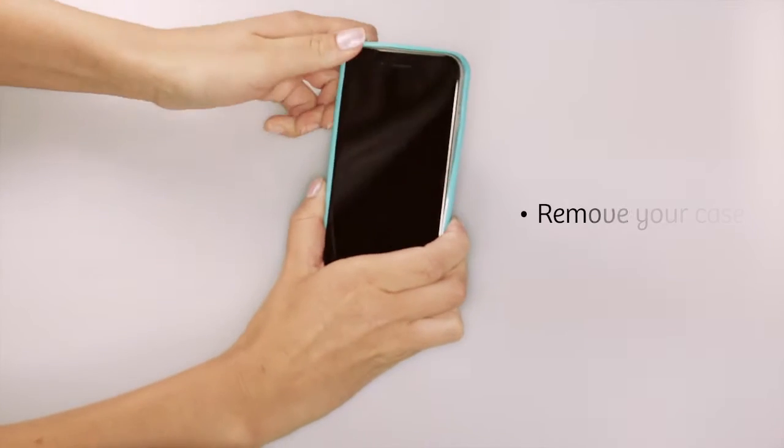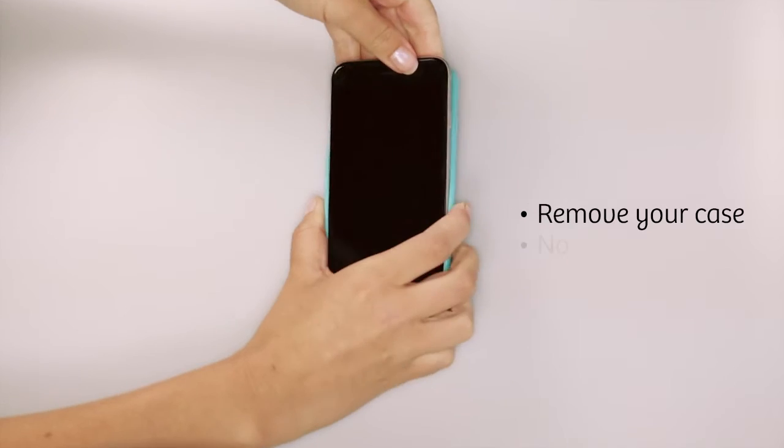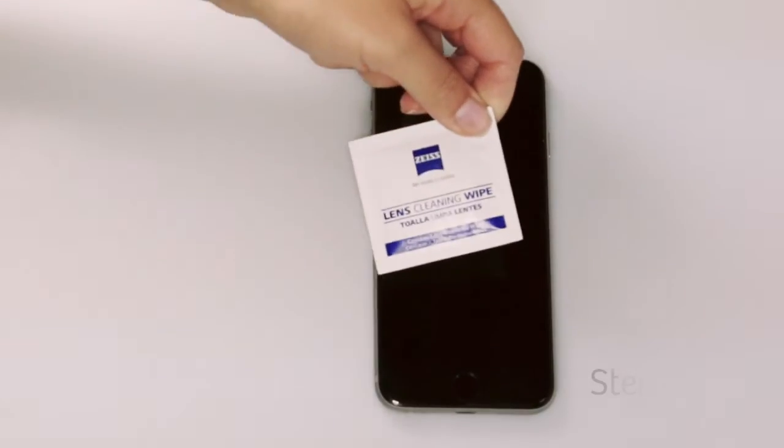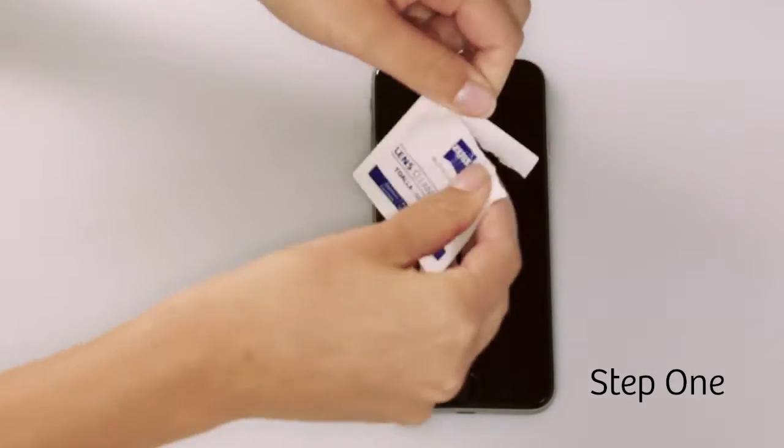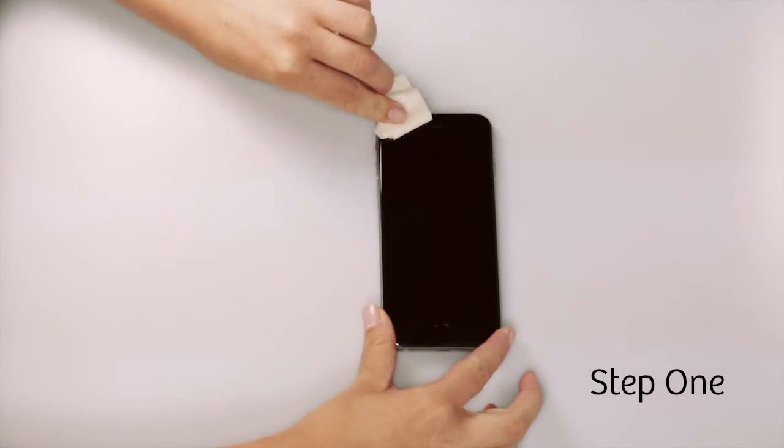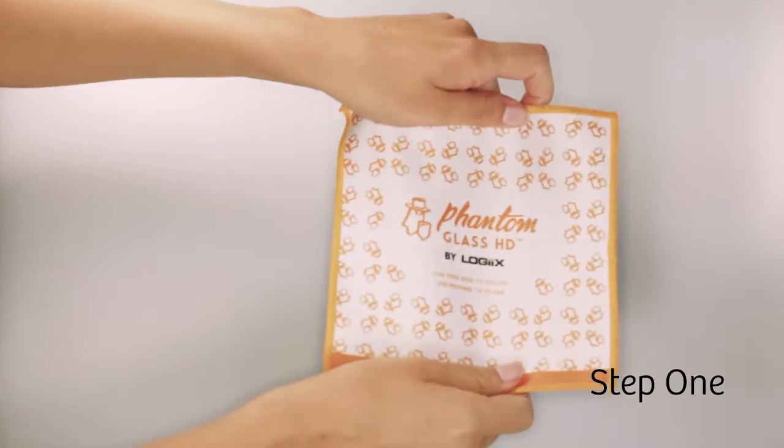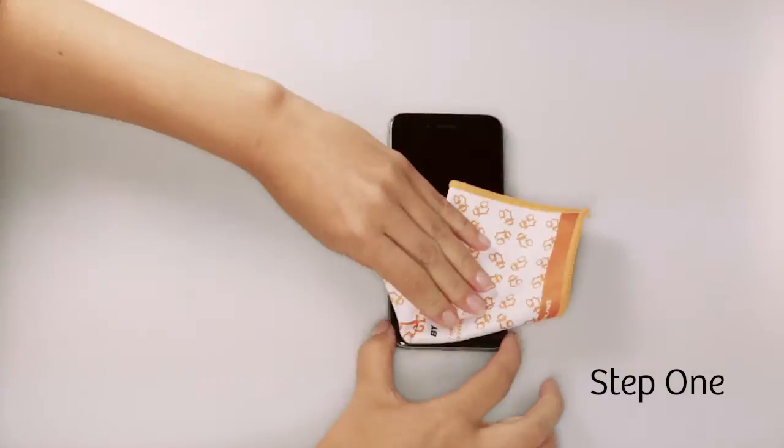Before you start, remove your case and make sure that you're installing the screen protector in a dust-free environment. Step one: clean the device's screen with the pre-moistened Zeiss wipe, then discard the wipe. Use the microfiber cloth to polish the surface and ensure that it's free of dust.